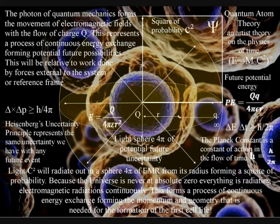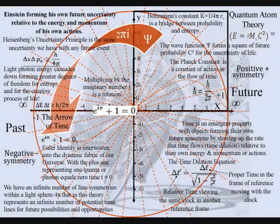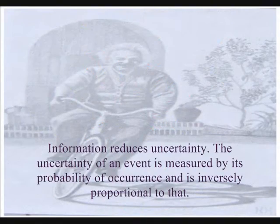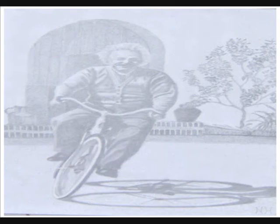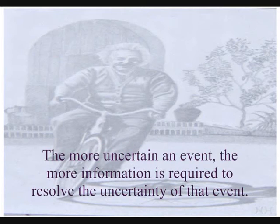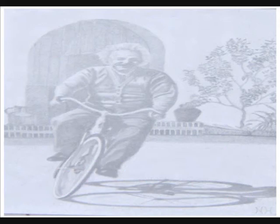But there is something else that is needed for the information we have all around us in our everyday life, and that is randomness of what might happen. Information reduces uncertainty. The uncertainty of an event is measured by its probability of occurrence and is inversely proportional to that. The more uncertain an event, the more information is required to resolve the uncertainty of that event.